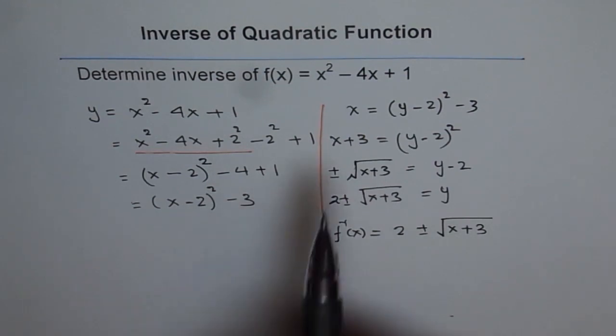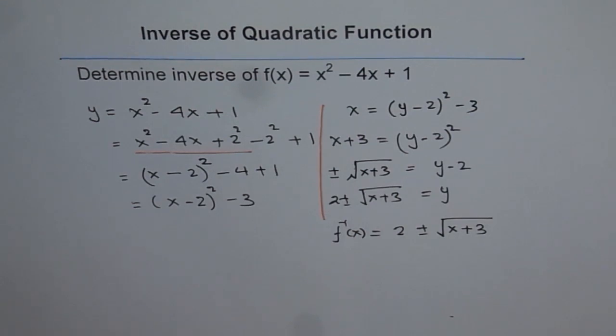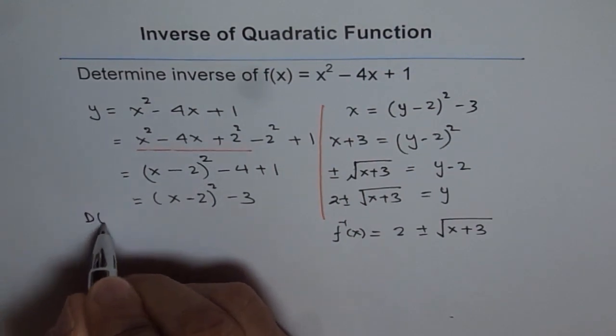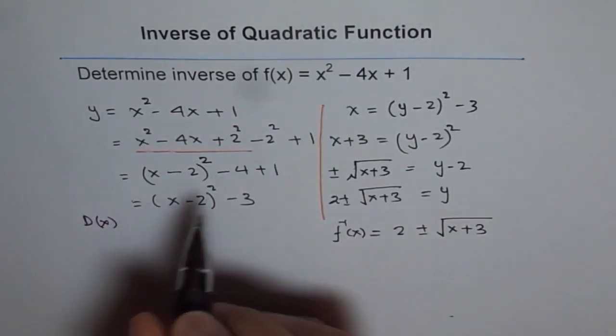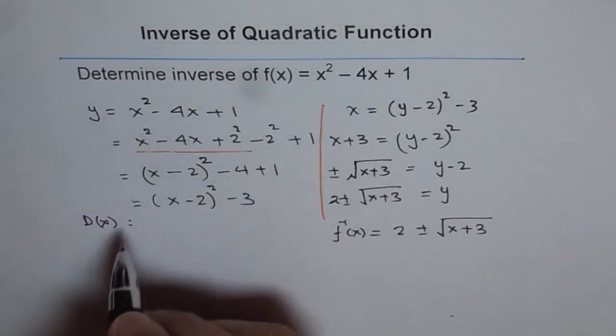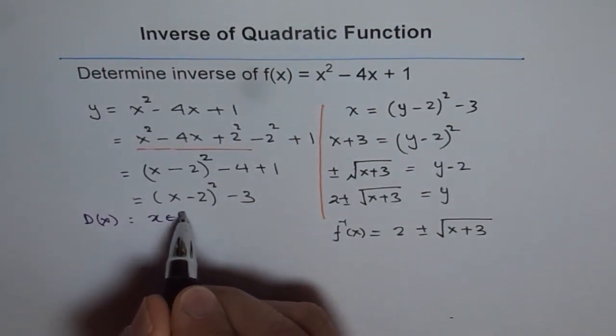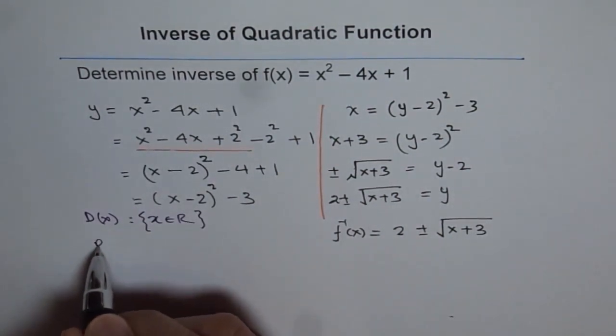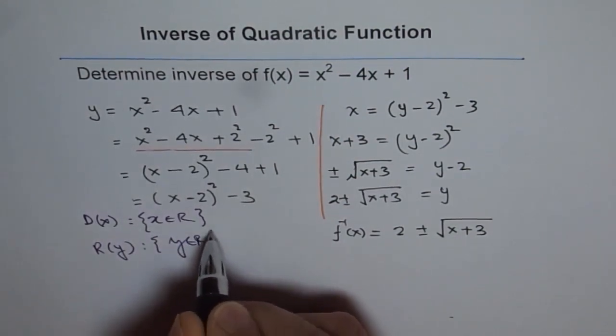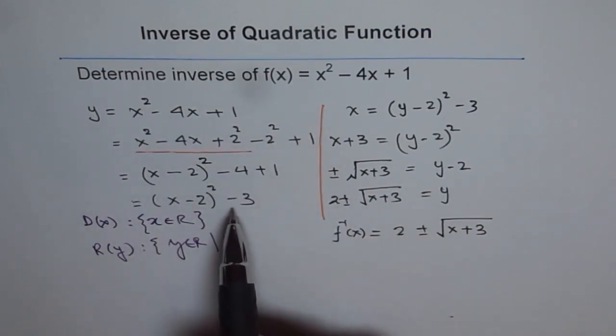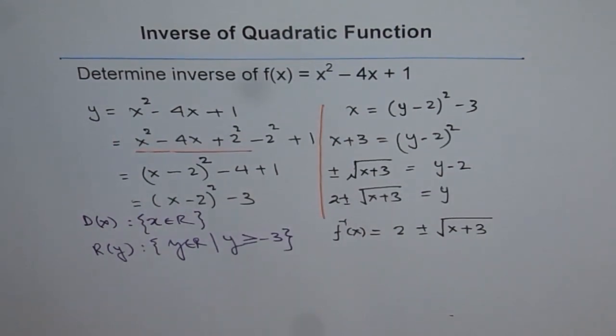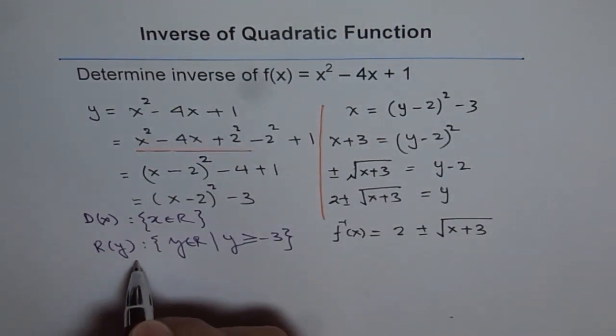Now at times you will be asked to do domain and range for this function. So let's write domain and range for the function. As you know, the domain for parabola is all real numbers. There is no restriction here. So it is x belongs to real numbers. But the range is restricted. Range is y belongs to real numbers, where the parabola opens upwards from -3. So y ≥ -3. So that is the domain and range for f(x).